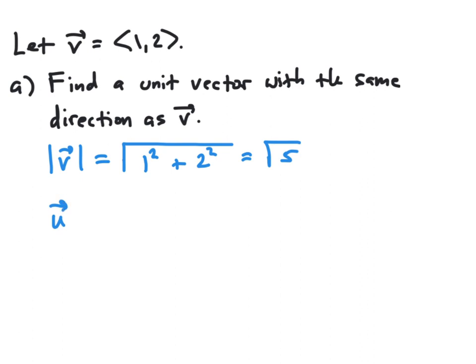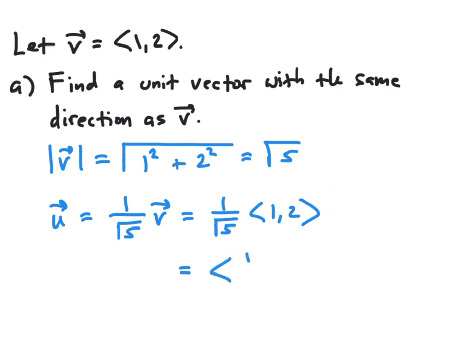If we then scale vector v by 1 over the square root of 5, we will obtain a vector in the same direction as v, but whose length is 1 over square root of 5 times that of v. Since the length of v is the square root of 5, the length of this scaled vector will be 1. We scale each component by that constant, giving us unit vector u with components 1 over square root of 5 and 2 over square root of 5.